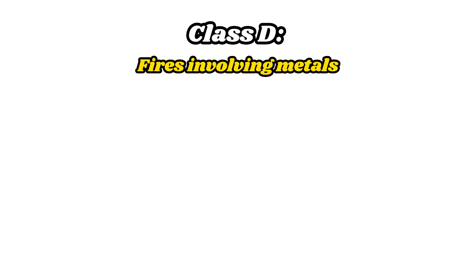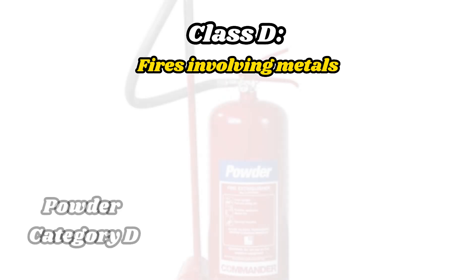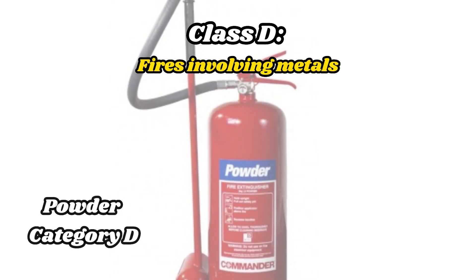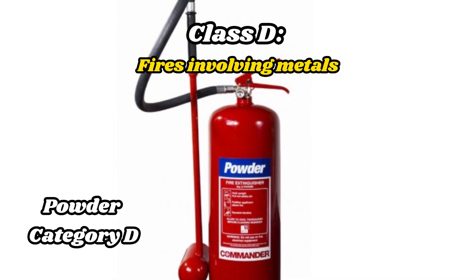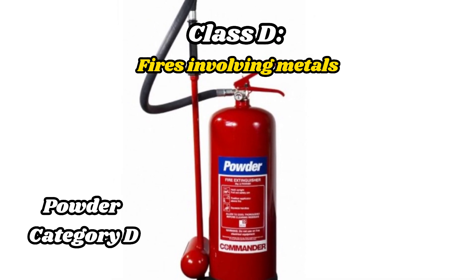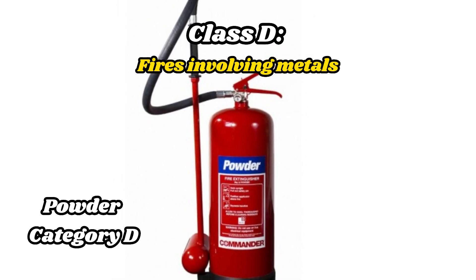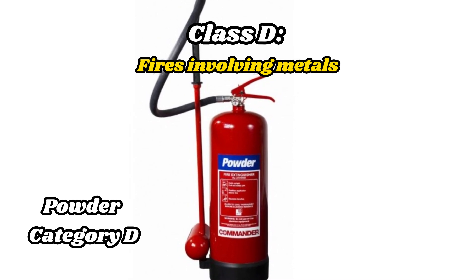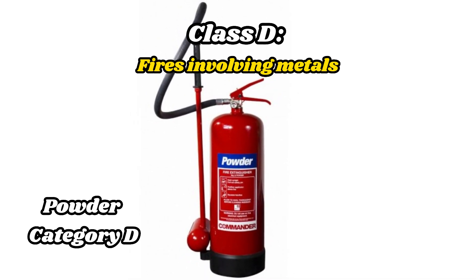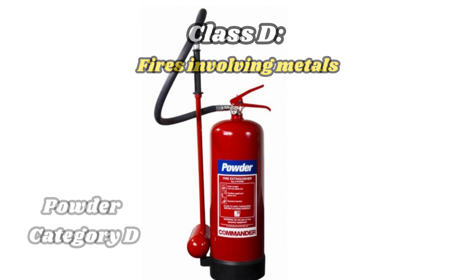Class D fires, associated with burning metals, require a specialized extinguisher that can put out metal fires. Powder extinguishers contain dry powder that reacts with the metal, forming an oxide and thereby stopping the fire. This type of extinguisher is the only one that can be used to extinguish Class D fires.